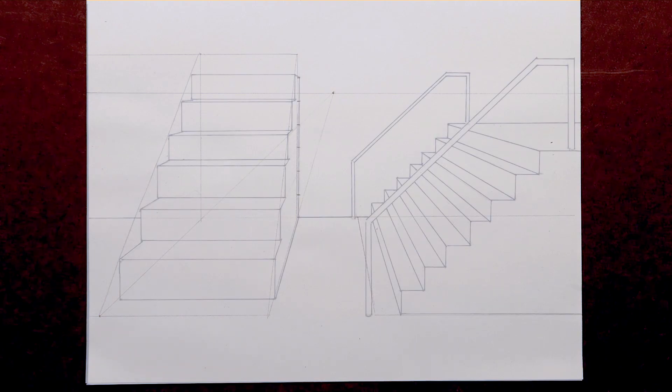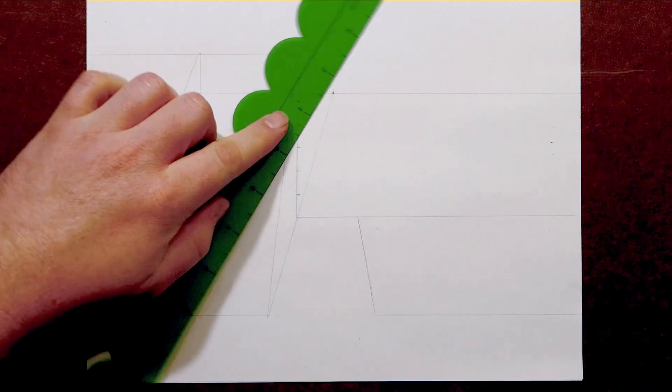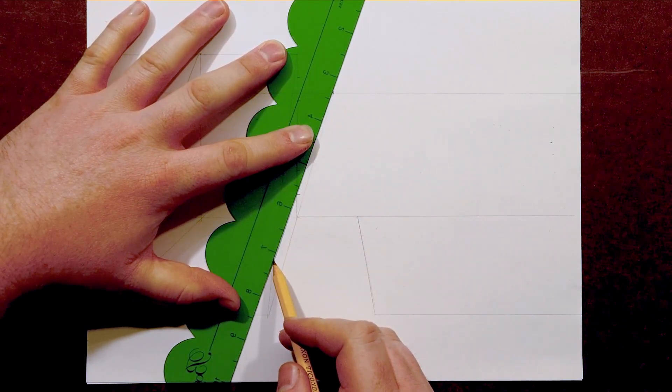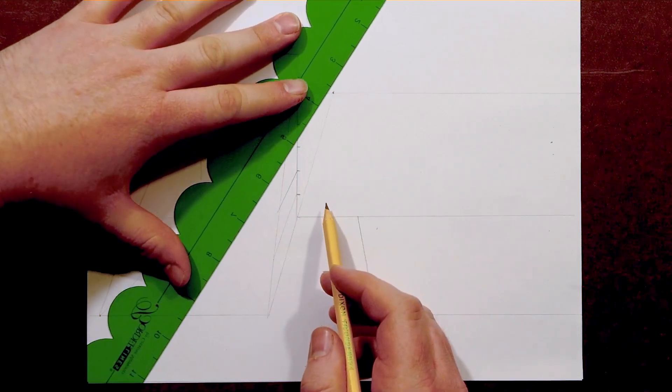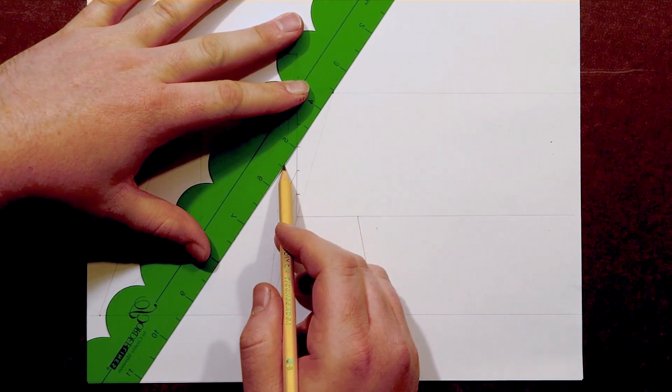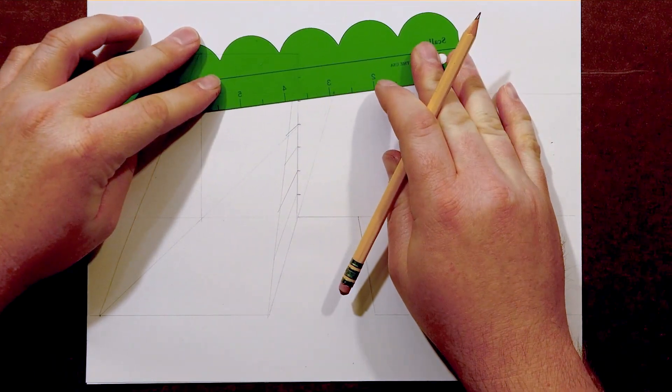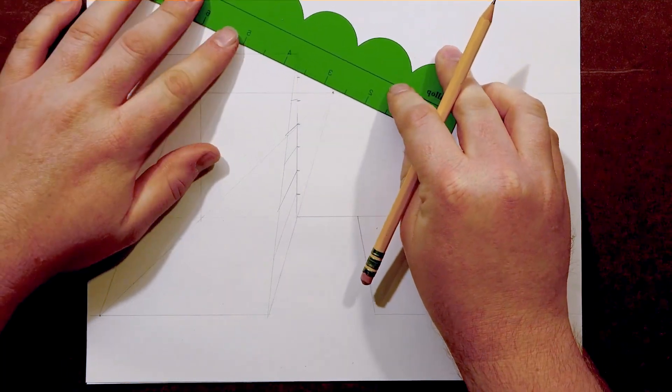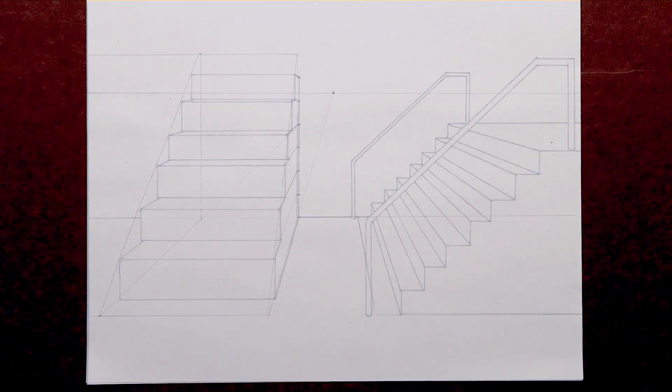Now all that's left to do is to simply connect those points with a vanishing point and extend it out onto the angled lines of the container. Where it intersects will be the front facing corner of each stair. Take your time lining up the vanishing point and extending through those equally marked stairs. It's important that they intersect with that new angle on the front of that wedge.